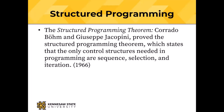The Structured Programming Theorem of 1966, proved by Corrado Böhm and Giuseppe Jacopini, states that any correct program needs only sequence, selection, and iteration. Sequence — doing one thing after another — is the native mode of the von Neumann computer because the program counter holds the address of the next instruction. Selection is the if-then-else, implemented by jamming a new address into the program counter. Iteration is looping, also implemented by changing the program counter.